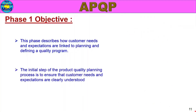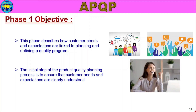The initial step of the product quality planning process is to ensure that customer needs and expectations are clearly understood. In the Planning Phase, the first step is to clearly understand customer needs and expectations. The first step is a typical process.